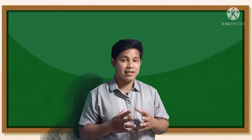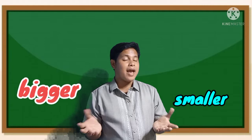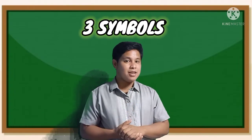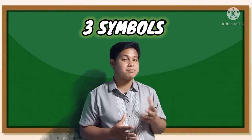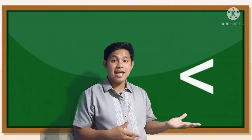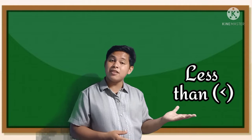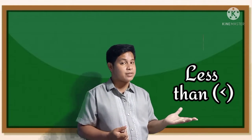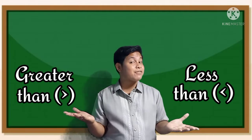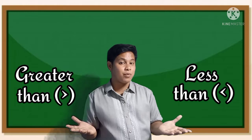In ordering numbers, we have to compare which is smaller or bigger. And in comparing numbers, we have three symbols we can use to identify which is bigger or smaller. These are less than, greater than, and equal. We use less than if the number is lesser or smaller than the other number. We use greater than if the number is bigger or greater than the other number.